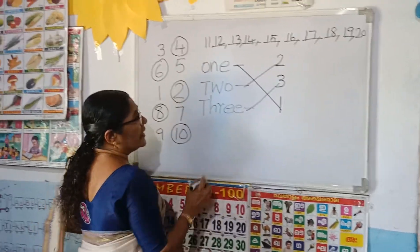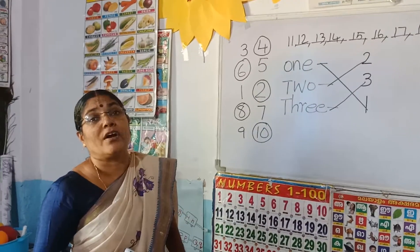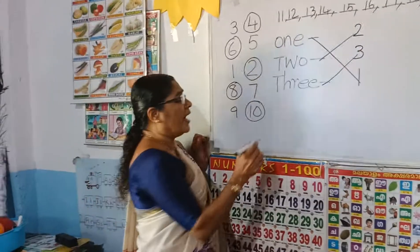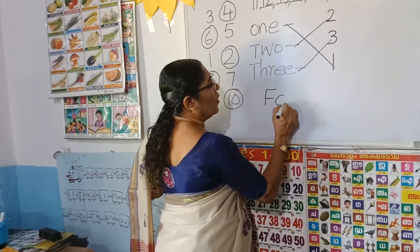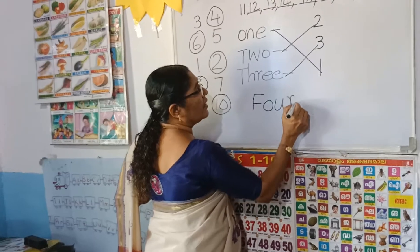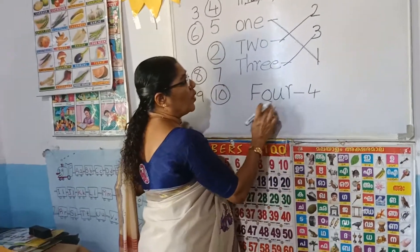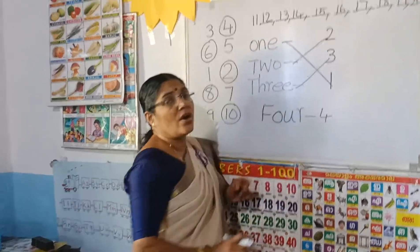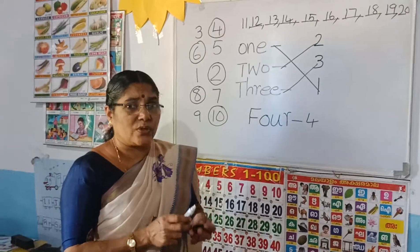Then after 3, today we can write and study the spelling of 4. What is the spelling of 4? F-O-U-R: 4. Today, all of you write one page full — the spelling of 4. Thank you children, see you then.